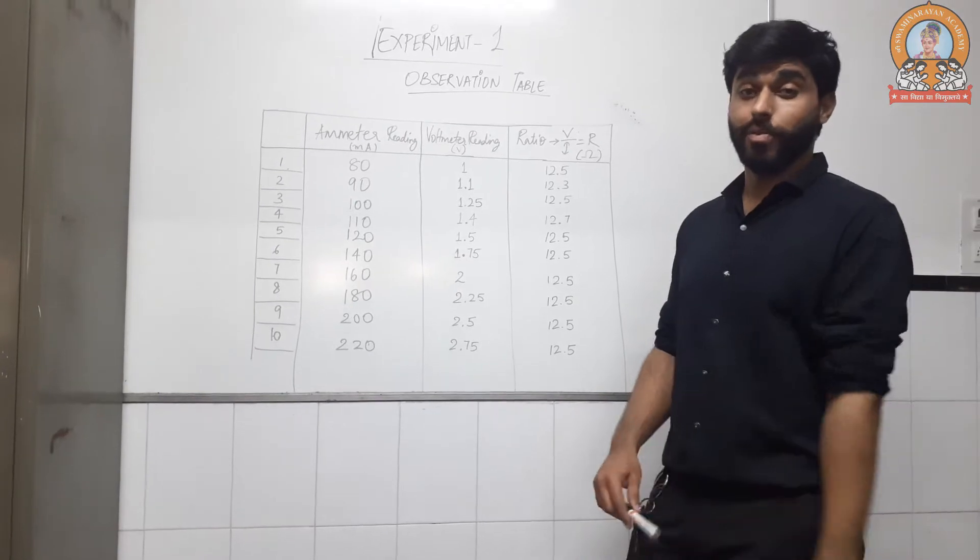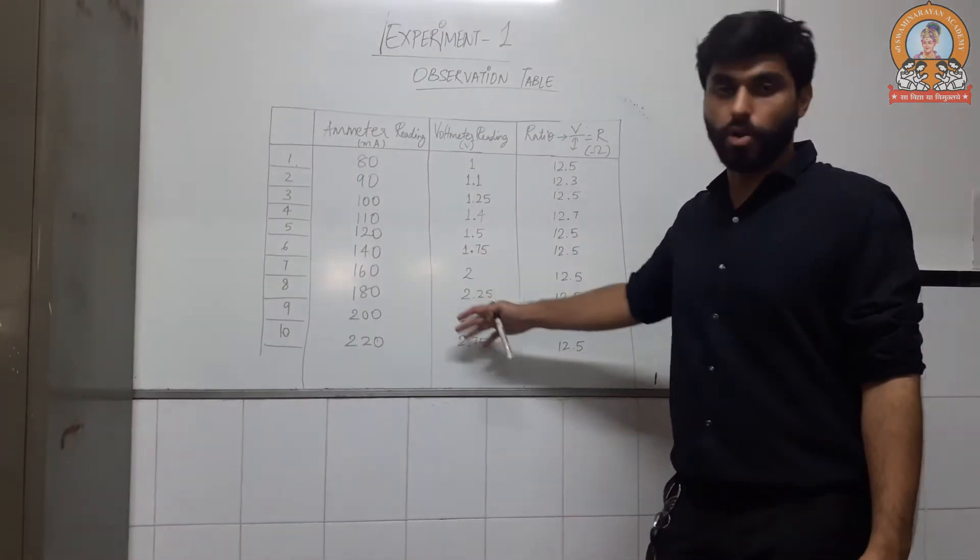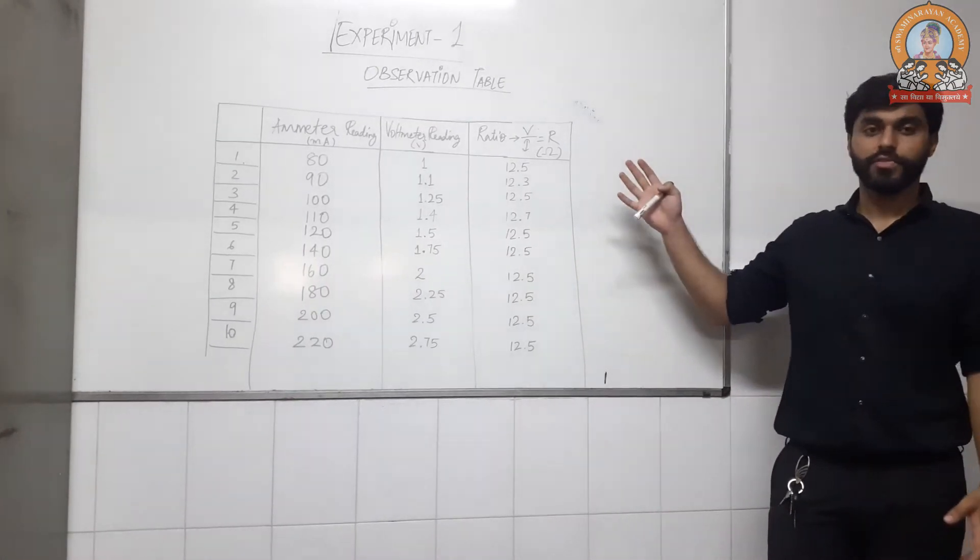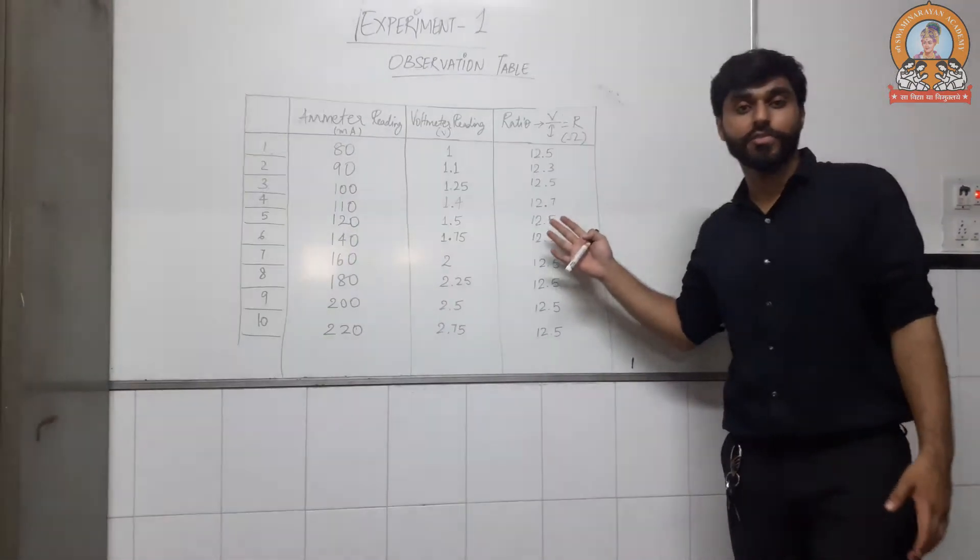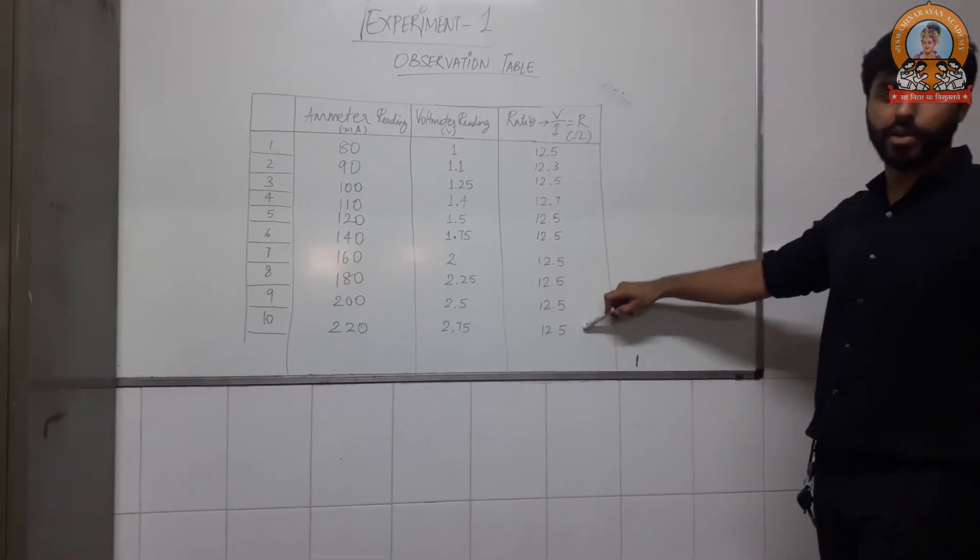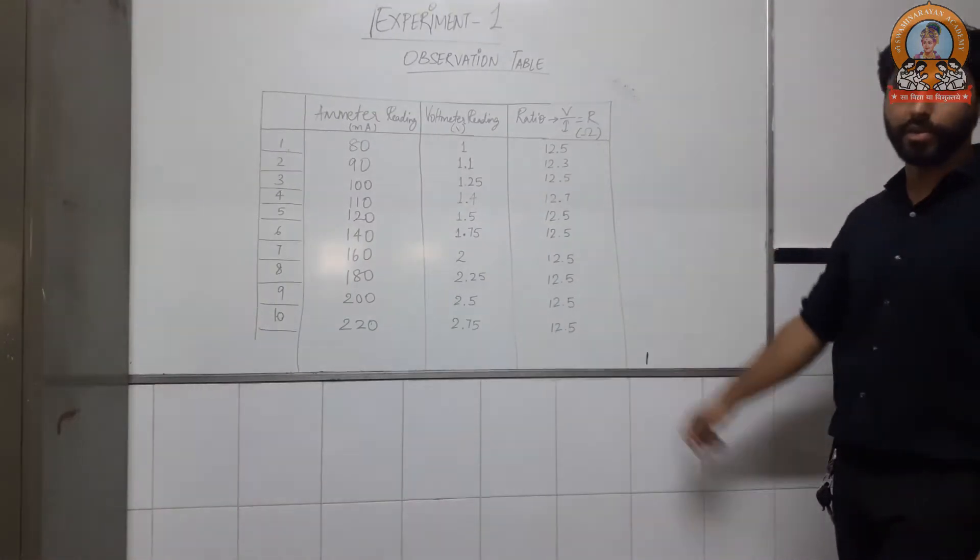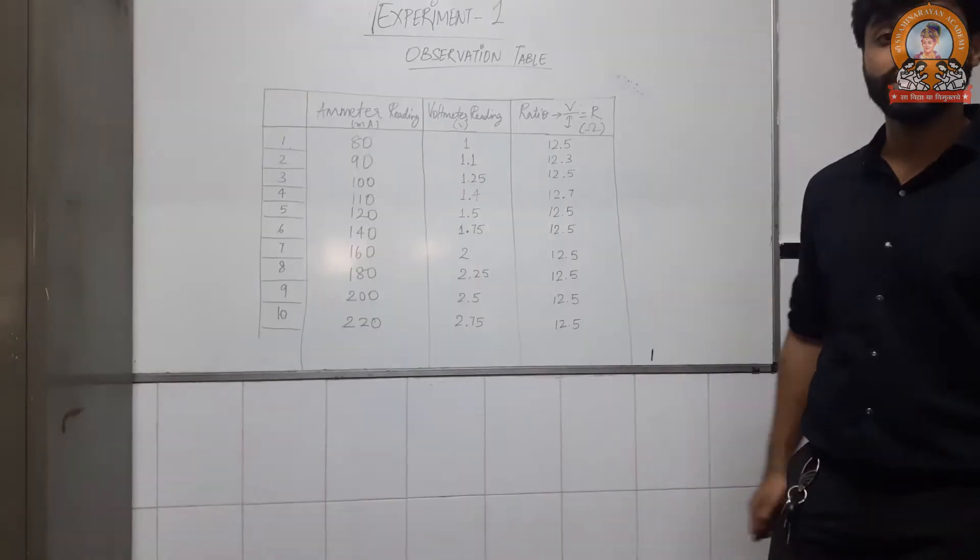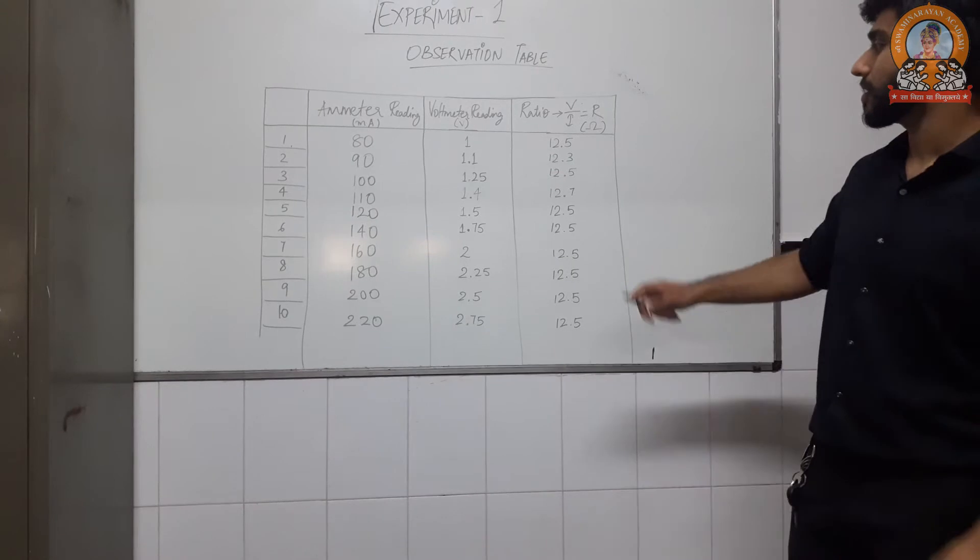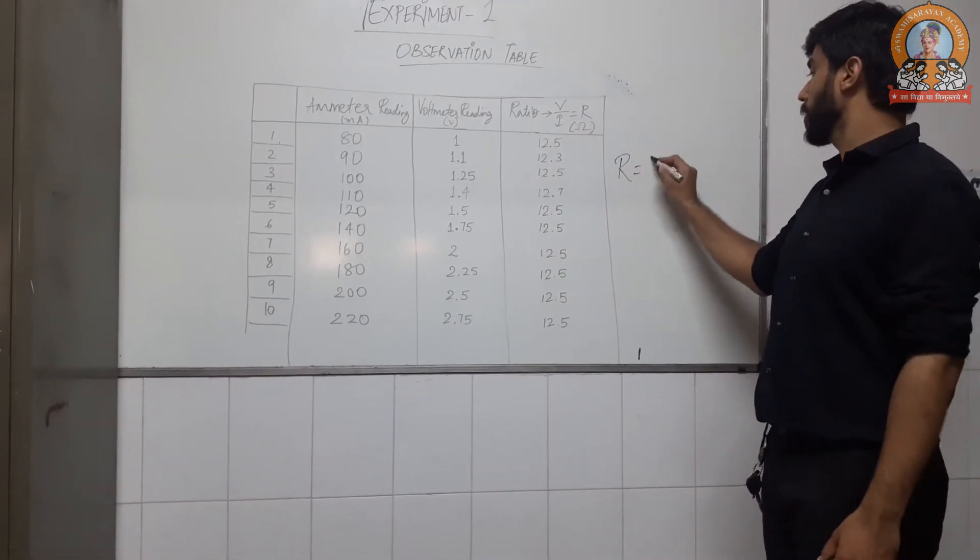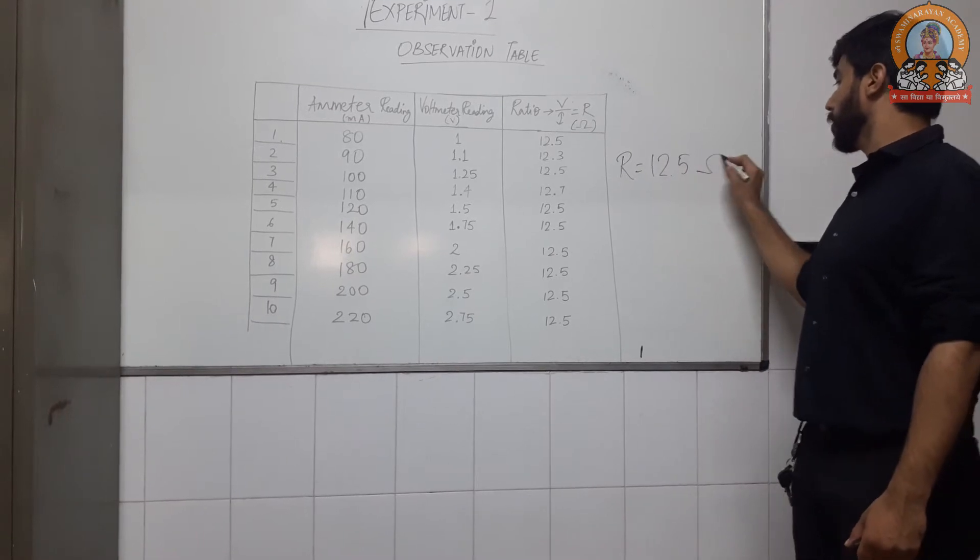So after performing, these are the observations that we got. You have to take 10 readings so that you can get a good graph of it. And our resistance came out to be around - the concurrent reading is 12.5. Actually we have to take the average. We can easily find out our average would be around 12.5 only. So our resistance for this particular experiment of the given wire is 12.5 ohm.